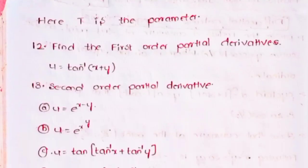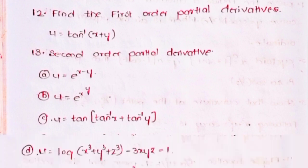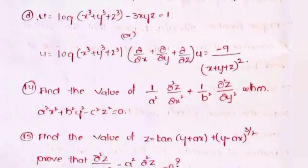Twelfth, find the first order partial derivatives of u = tan⁻¹(x + y). Thirteenth, find the second order partial derivatives of: (a) u = e^(x−y), (b) u = e^(x^y), (c) u = tan(tan⁻¹x + tan⁻¹y), (d) u = log(x³ + y³ + z³ − 3xyz). Show that (∂/∂x + ∂/∂y + ∂/∂z)u = −9 / (x + y + z)².